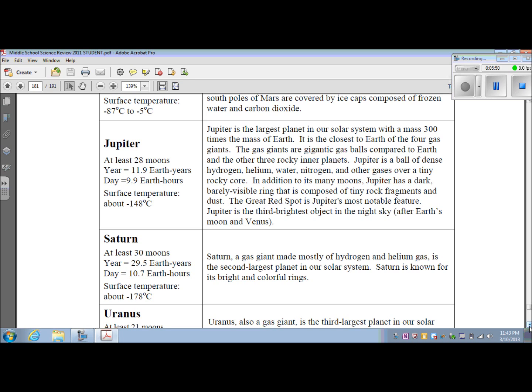Saturn. It has at least 30 moons. Its year is 29.5 Earth years. Its day is 10.7 Earth hours. And its surface temperature is negative 178 degrees Celsius. Saturn, a gas giant made mostly of hydrogen and helium gas, is the second largest planet in our solar system. Saturn is known for its bright and colorful rings.